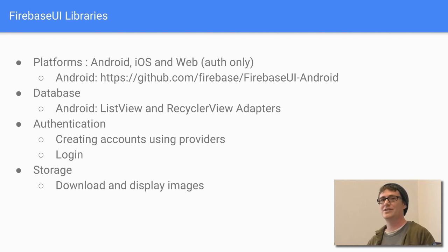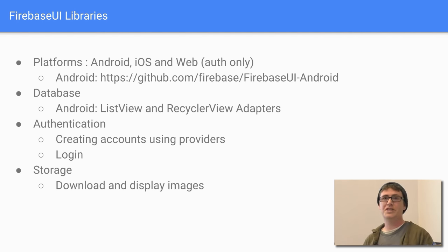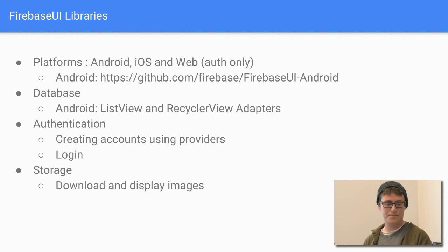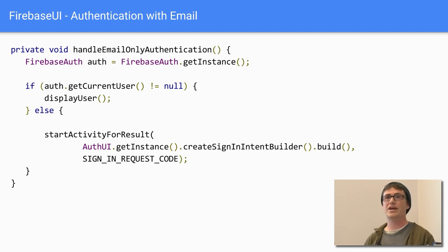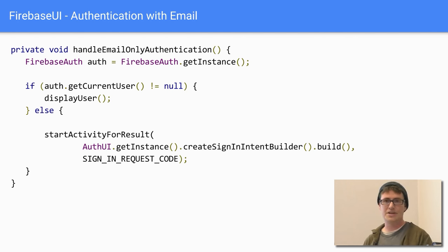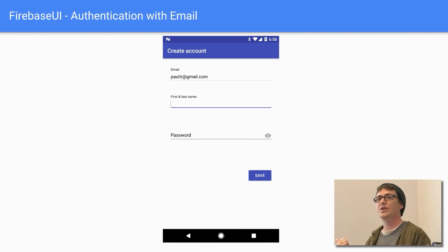Authentication handling is really important because as we saw, it's complicated — the Firebase UI library handles all the contingencies for you. For storage, they recently added a listener that loads images into an image view from your online files. For email auth, you just call AuthUI.getInstance().createSignInIntentBuilder() and launch it with startActivityForResult. It provides a custom UI for username, password, and account creation.